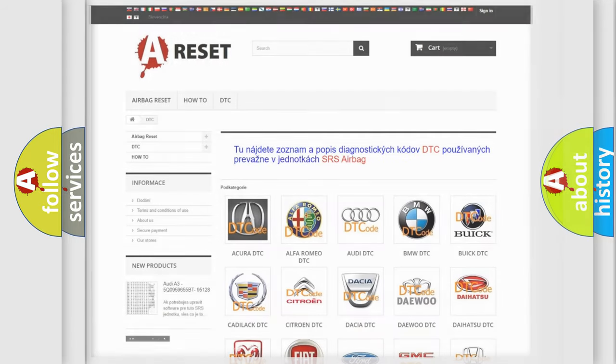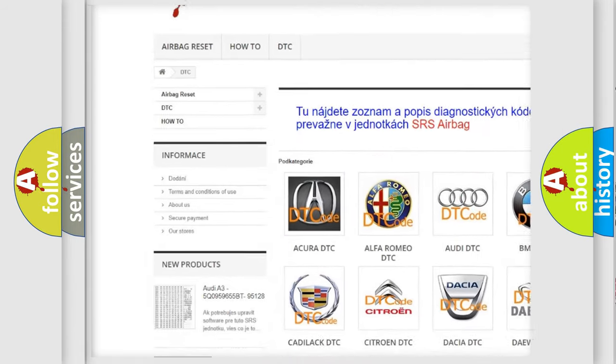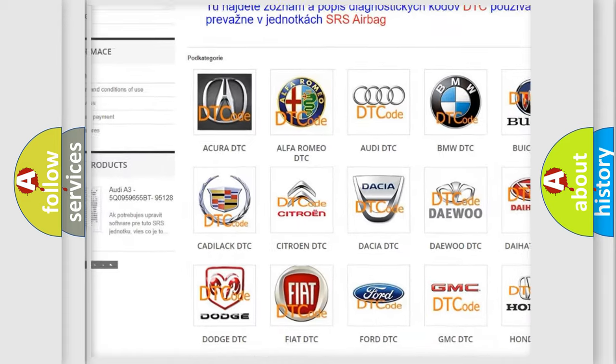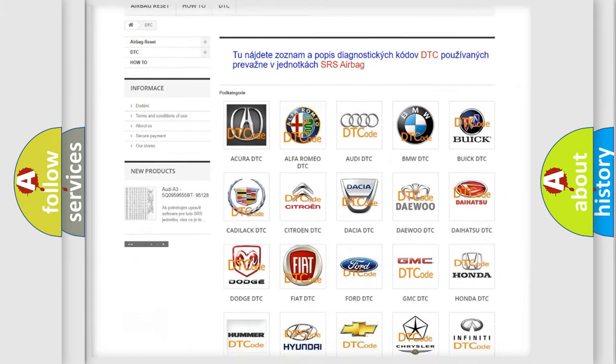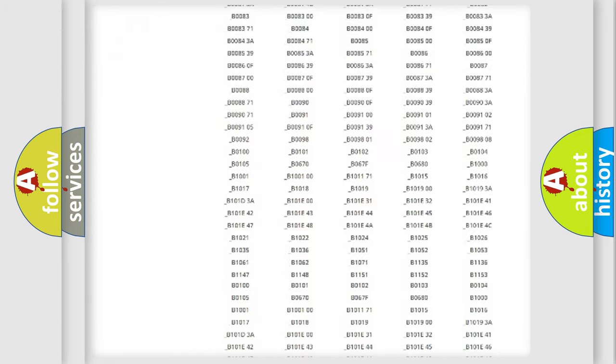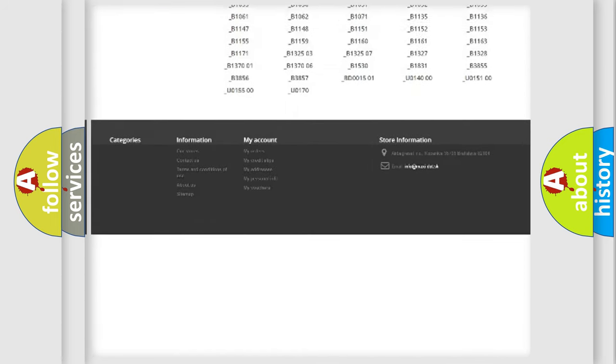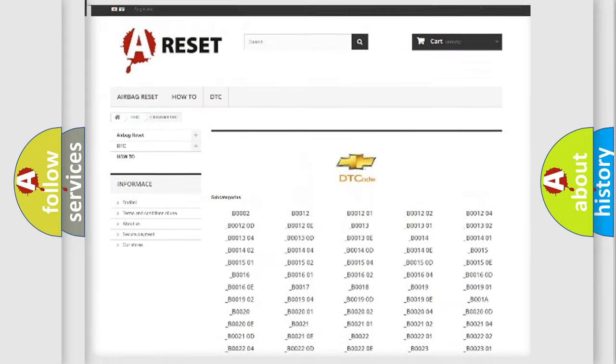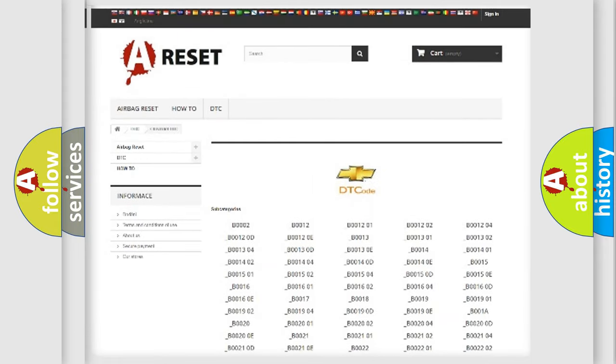Our website airbagreset.sk produces useful videos for you. You do not have to go through the OBD2 protocol anymore to know how to troubleshoot any car breakdown. You will find all the diagnostic codes that can be diagnosed in Chevrolet vehicles, and many other useful things.